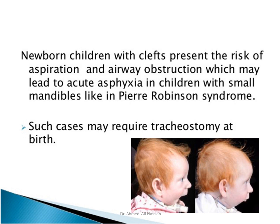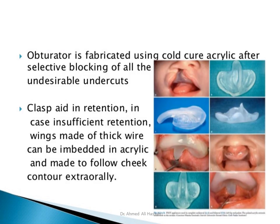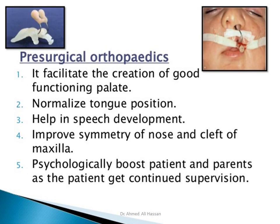In cases like Pierre Robin syndrome, patients have a severe form of retruded mandible and may require tracheostomy. An obturator can be inserted to close the cleft palate temporarily in the early days or weeks before definitive surgical repair.